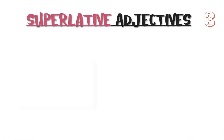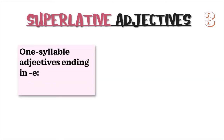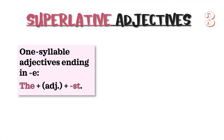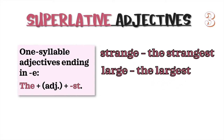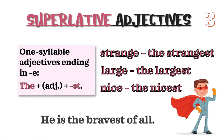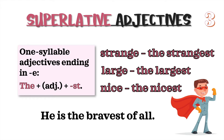Superlative Rule 3: One syllable adjectives ending in e. We add the article the, plus the adjective, plus -st. For example: strange → the strangest; large → the largest; nice → the nicest. Example sentence: He is the bravest of all. We don't add another e — we leave the e and add -st.